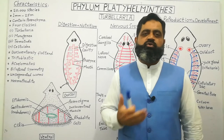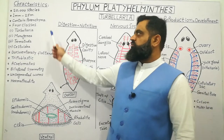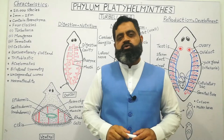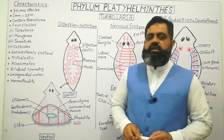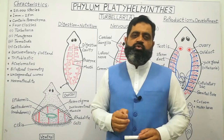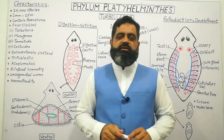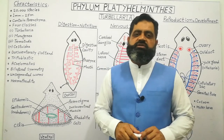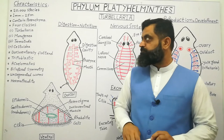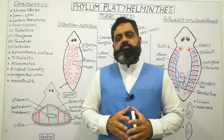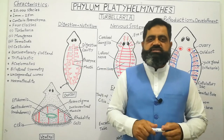First of all, we are going to look at the main characteristics of Phylum Platyhelminthes. There are 20,000 species of Phylum Platyhelminthes found in the world. They range in size from 1 mm to 25 m. For example, planaria can reach up to a few centimeters, but other animals of this phylum like tapeworm can reach up to 25 m. They have parenchyma, which is a third layer formed in the animal kingdom, which we will discuss later.